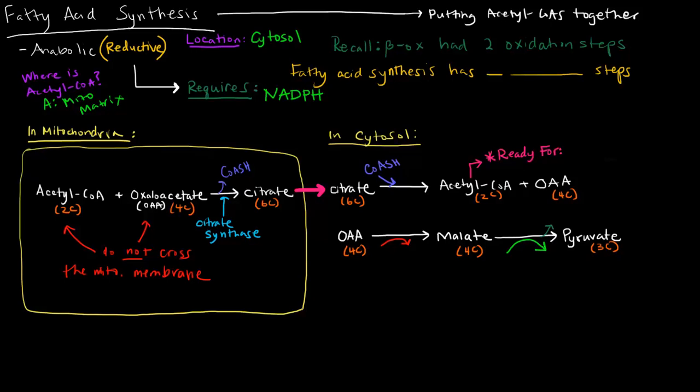Citrate can cross the mitochondrial membrane. Once we have the citrate out in the cytosol, there's an enzyme called citrate lyase, which can cut citrate back into acetyl-CoA and oxaloacetate. This is good because now we have these acetyl-CoAs available for fatty acid synthesis in the cytosol.